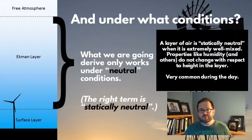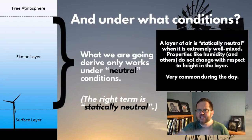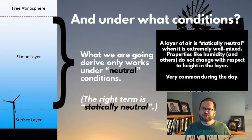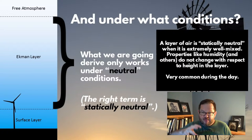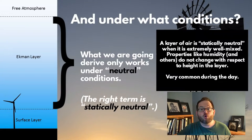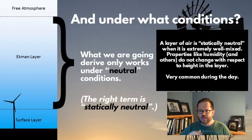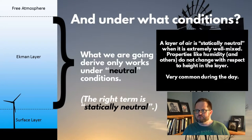What we mean by statically neutral is that it is well mixed — extremely well mixed — with the atmosphere in this layer continuously mixing. In the case of the boundary layer and Ekman layer, we're typically talking about updrafts and downdrafts, rising plumes of warm air from the surface. When the atmosphere is well mixed, the air has the same properties at any height in the boundary layer — for example, humidity will be the same at any height. That's what well mixed means.